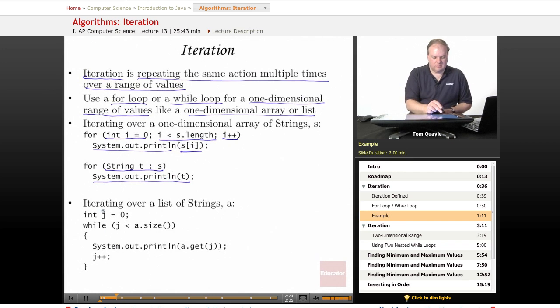I can also use a while loop. If I have a list of strings called a, I can use a while loop and initialize the variable j to 0. While j is less than the size of the list, using the size method, I call the get method on list a and get the string that is in position j of list a. I pass that to println and print it out, then I increment my loop counter j. This is a way of iterating over a list of strings or objects.